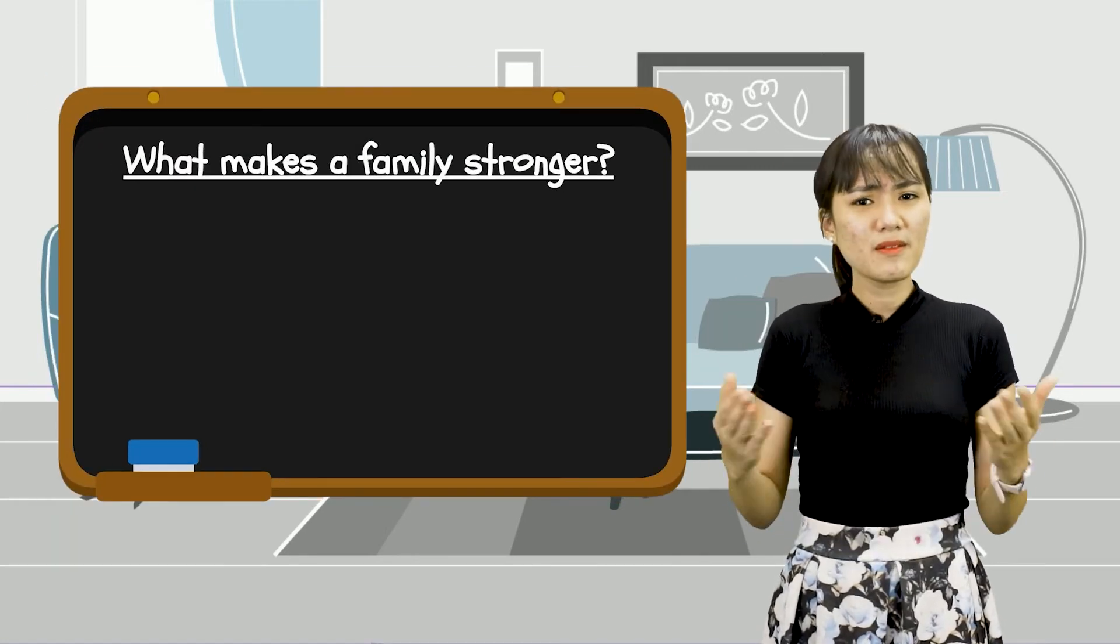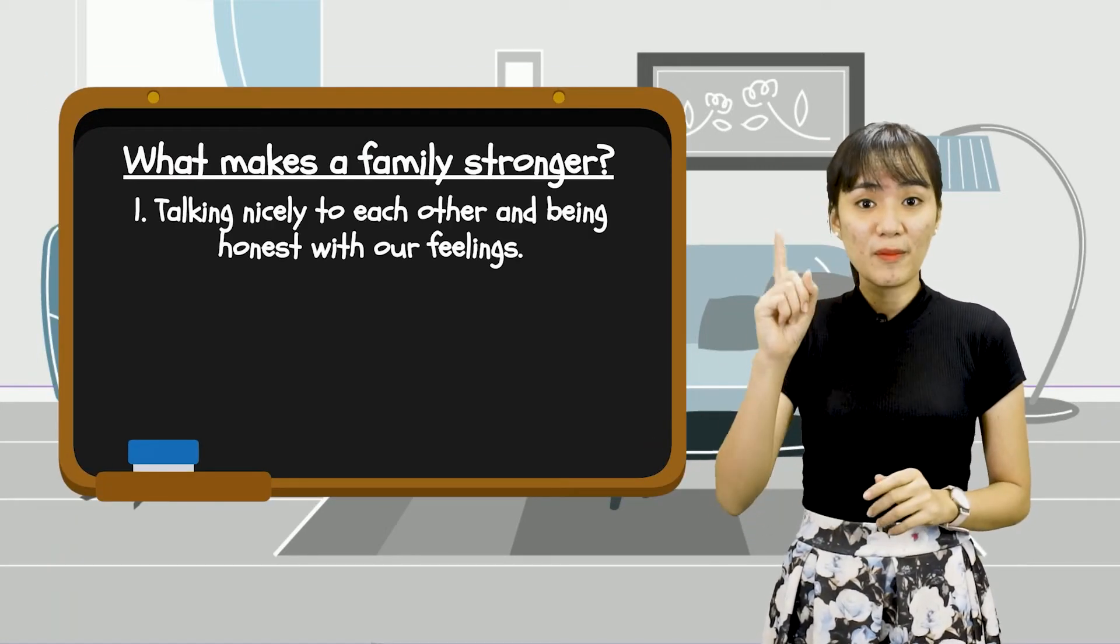How many things were you able to write down? That's good! I want to share mine with you. I wrote down what makes a family stronger. Number one, talking nicely to each other and being honest with our feelings.